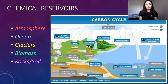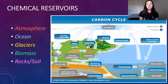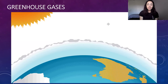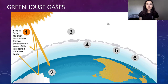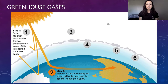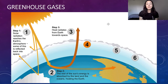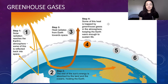Now that we understand what the major biogeochemical cycles are and how they move between different chemical reservoirs, I want to talk about the photosynthesis and respiration cycle. But first we need to talk about greenhouse gases to understand why carbon dioxide in the atmosphere is important. In this animation of the greenhouse gas effect, solar radiation reaches Earth's surface, some gets reflected back into space, and some gets absorbed by Earth's surface, heating the ocean and land. It can then be re-radiated back into space, but some of this heat gets re-scattered by carbon dioxide and other greenhouse gases in the atmosphere, and therefore stays in the atmosphere and continues to heat the Earth.